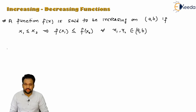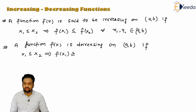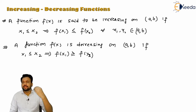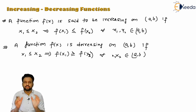Now, talking about the decreasing function: f of x is said to be decreasing on some interval a to b if, for two points x1 and x2 where x1 is less than x2, substituting the smaller x1 gives a greater value compared to x2. So substituting a smaller point gives a greater value and substituting a greater point gives a lesser value. If this condition is satisfied, that is known as a decreasing function, for all x1 and x2 belonging to interval a comma b.